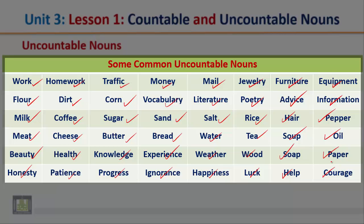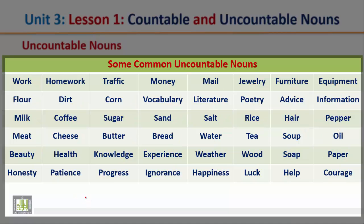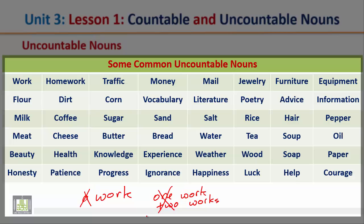Also: honesty, patience, progress, ignorance, happiness, luck, help, courage. All the words in this list are uncountable nouns — they cannot be preceded by 'a' or 'an,' cannot be counted with numbers, and don't have a plural form. For example, we cannot say 'a work' because 'work' is an uncountable noun. We also cannot say 'one work' or 'two works.'